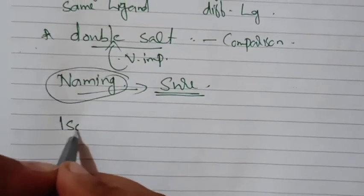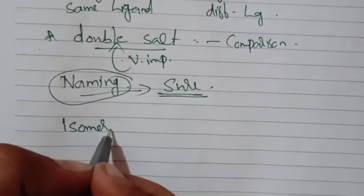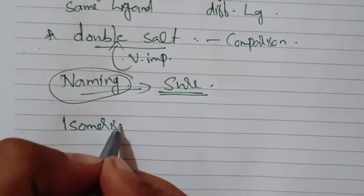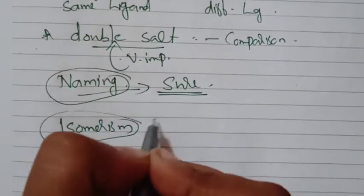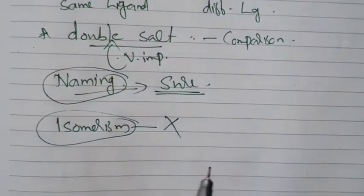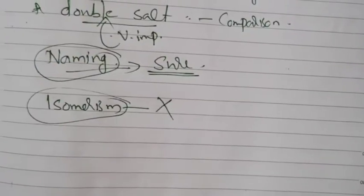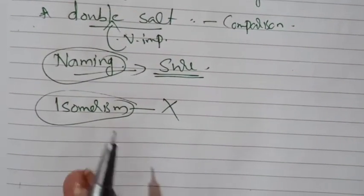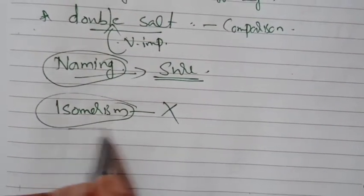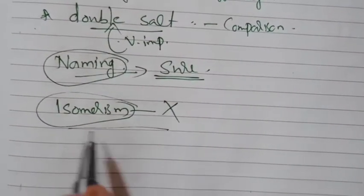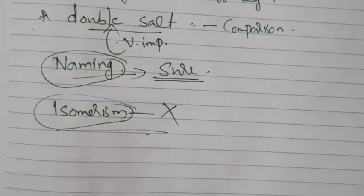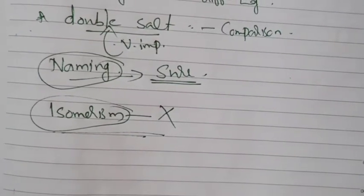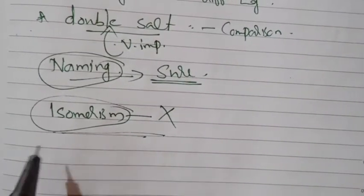The next topic is isomerism. For CBSE students, this topic has been completely removed. Isomerism topics are completely removed for CBSE students, so we are not going to study it.